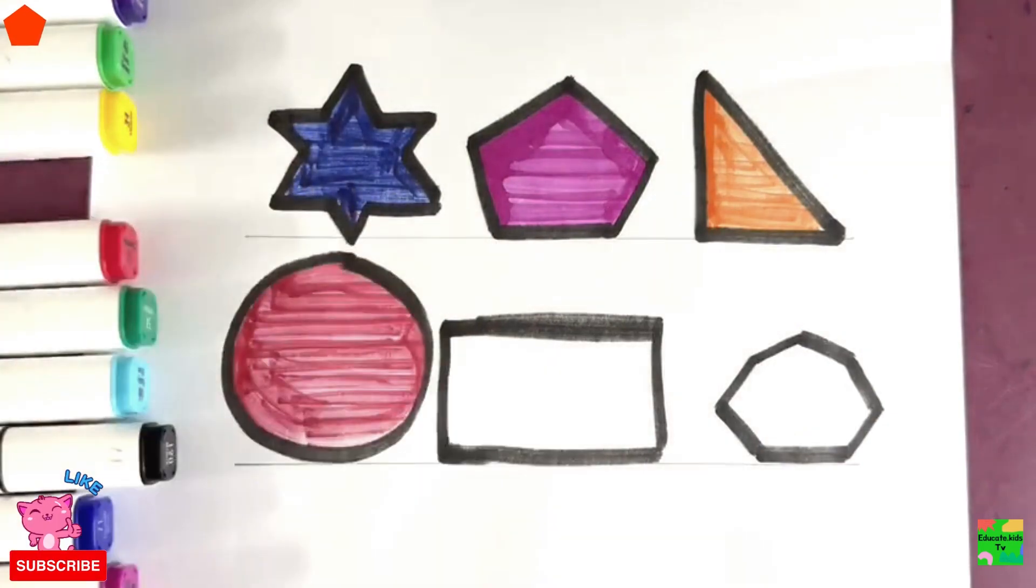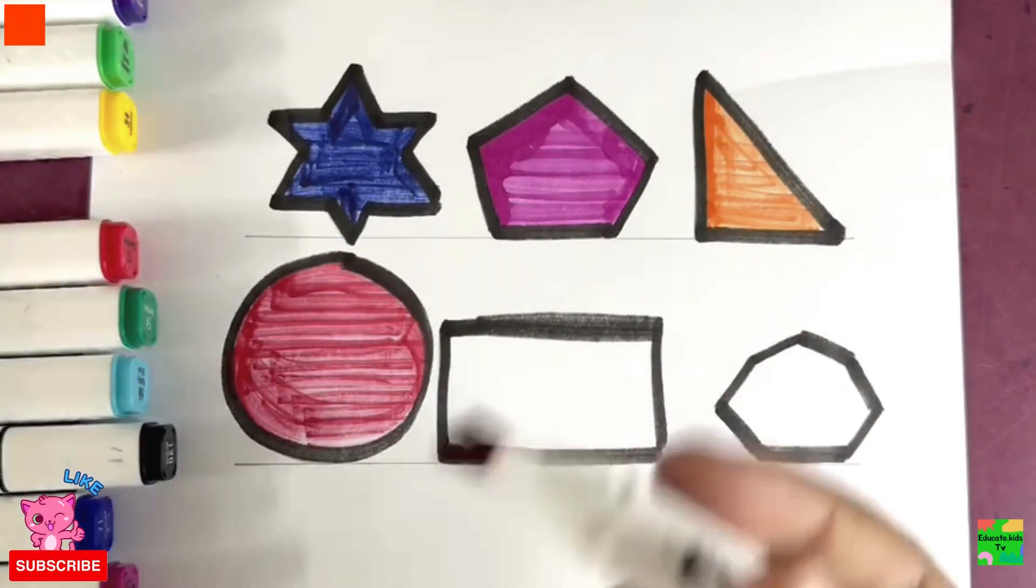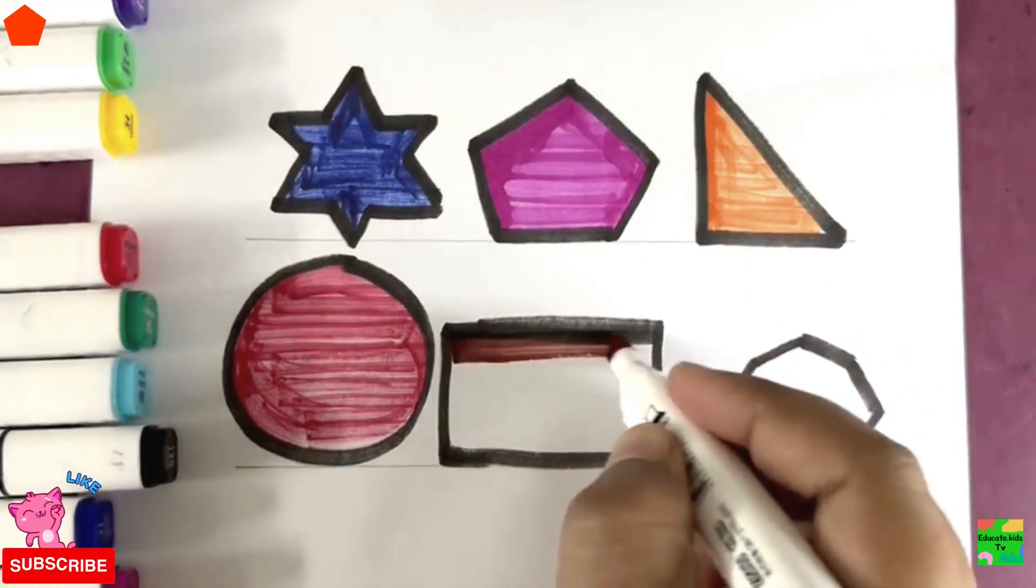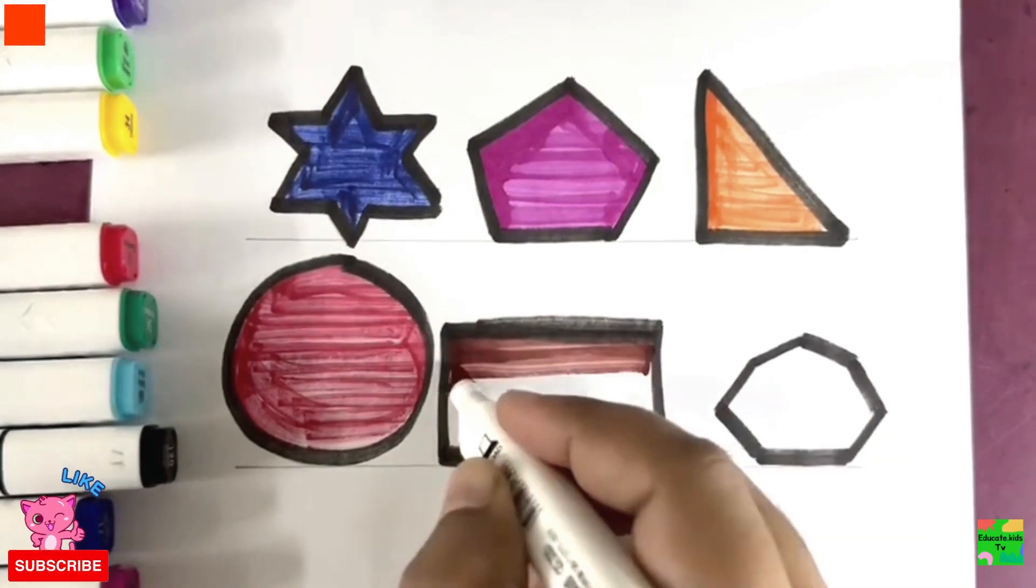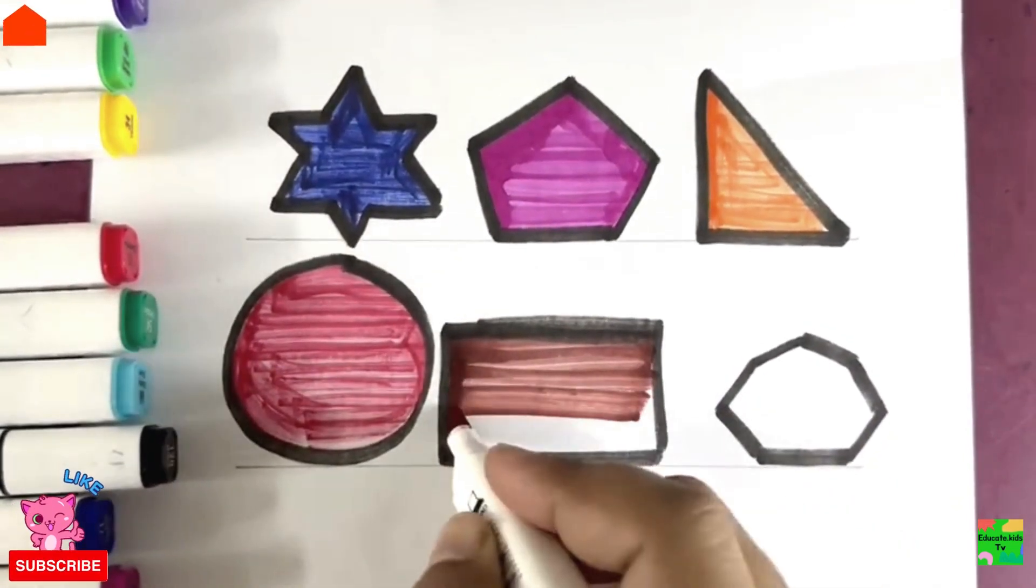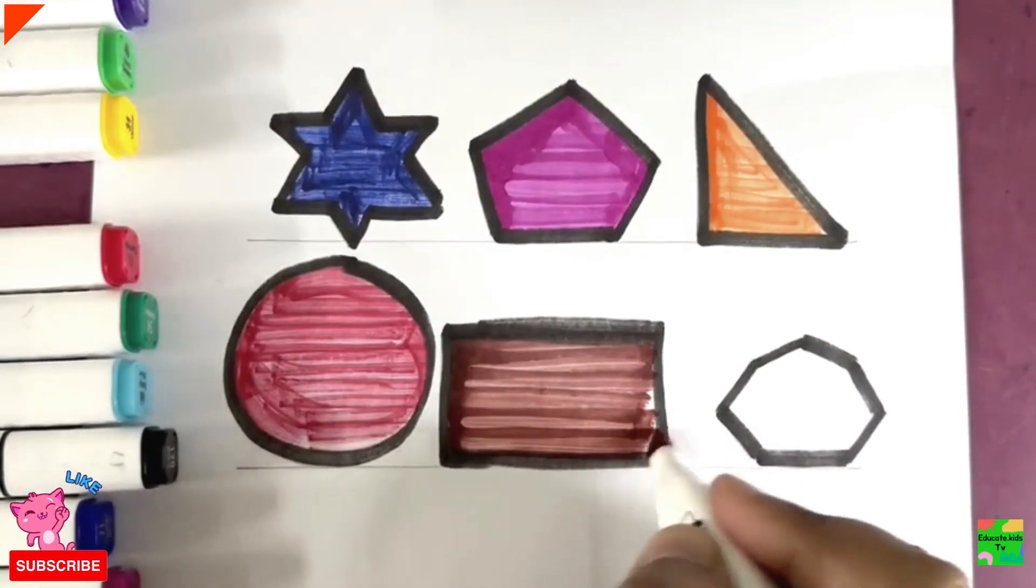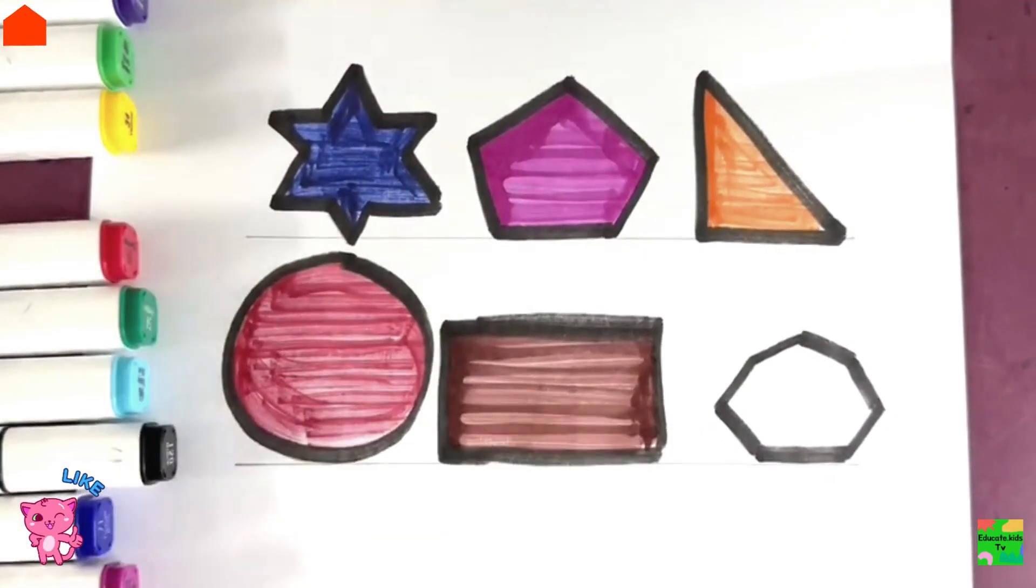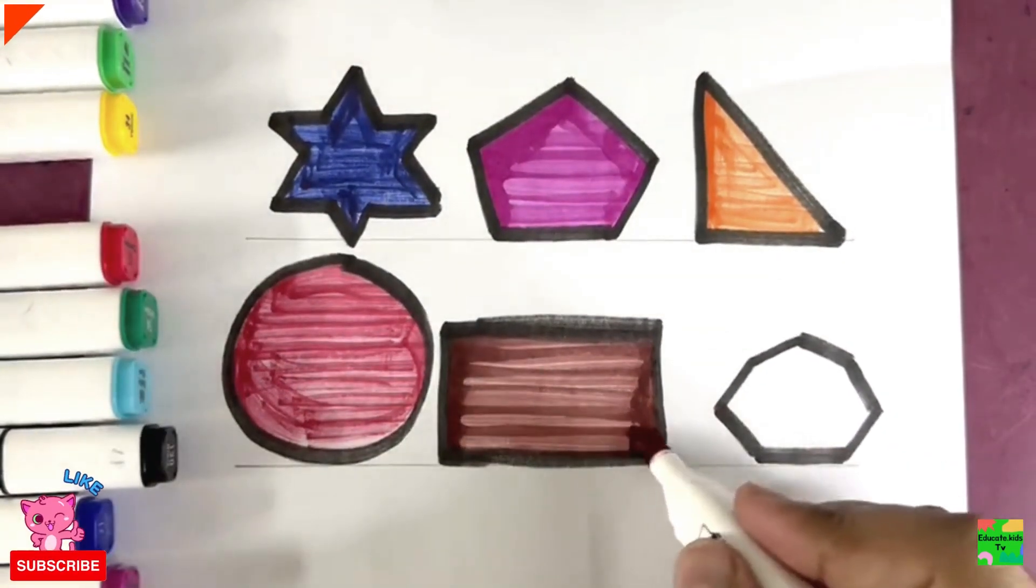Now next is rectangle. I'll color it with brown color. Hmm! Nice! Isn't it?